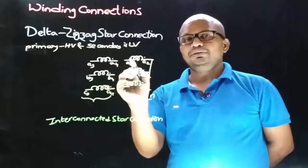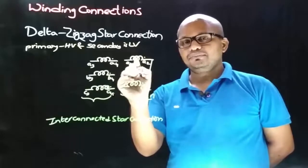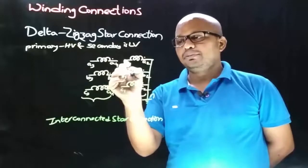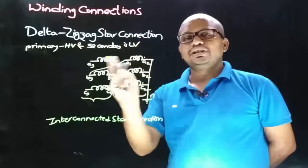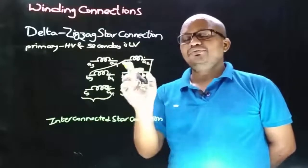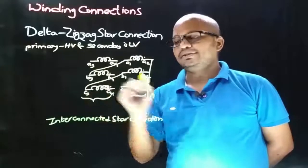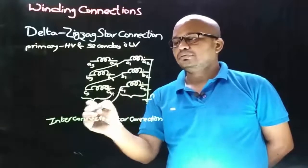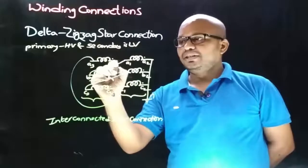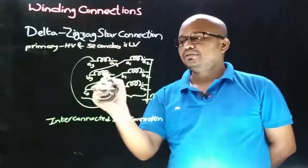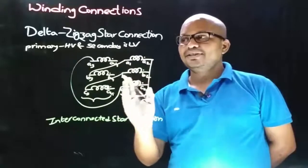To obtain zigzag connection, non-dot terminal a1 is connected with non-dot terminal b3, non-dot terminal b1 with non-dot terminal c3, and non-dot terminal c1 with non-dot terminal a3. This achieves phase opposition connection. The three phases in zigzag star connection are then A4 to N, B4 to N, and C4 to N.